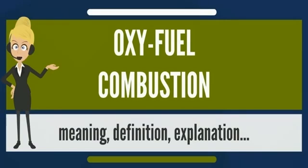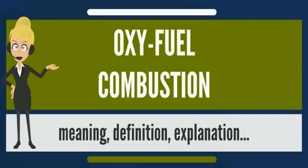In industries other than power generation, oxyfuel combustion can be competitive due to higher sensible heat availability. Oxyfuel combustion is common in various aspects of metal production. The glass industry has been converting to oxyfuel since the early 1990s because glass furnaces require a temperature of approximately 2,800 degrees Fahrenheit, which is not attainable at adiabatic flame temperatures for air-fuel combustion unless heat is regenerated between the flue stream and the incoming air stream.